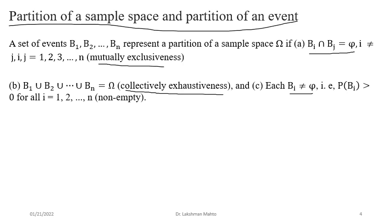So non-emptiness is the third essential condition for a partition. Geometrically, if your sample space is partitioned into P portions, taking the union gives back the sample space, and there is a clear separation between any two members. Each member Bi contains at least one outcome — it cannot be empty. That is the definition of partition.